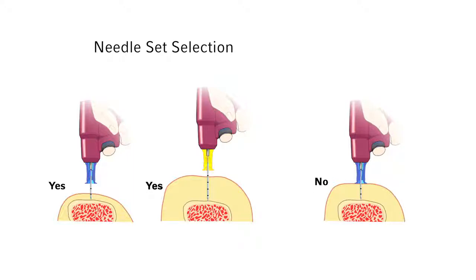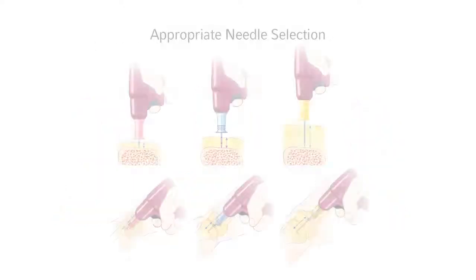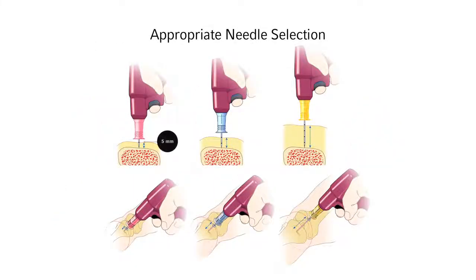An undersized needle set will create a hole in the bone unnecessarily and render the site unusable for future IO access for a minimum of 48 hours. Appropriate needle selection is evidenced by the black 5 mm mark visible above the skin when the tip of the needle set is touching the bone prior to drilling.